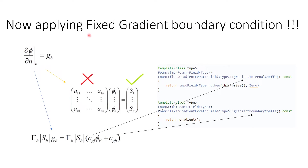Now let's apply the fixed gradient boundary condition. As mentioned, the gradient is equal to gb, some fixed value. The important thing to notice here is that the gradient is already specified — phi is of no use now. Because the gradient itself is directly mentioned, there will be nothing in the coefficient matrix on the left-hand side, since there is no multiplication with a phi term. It will directly go into the source terms in the source matrix.